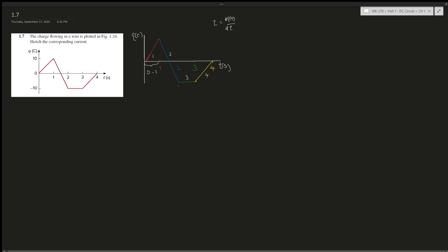For the first section, from t = 0 to t = 1, we find the current using rise over run. The rise is 10 and the change in time is 1, so i(t) = 10/1 = 10 amperes. You can also find this by taking the equation q(t) = 10t and differentiating, which gives 10 as well.